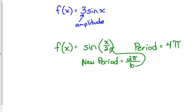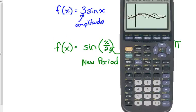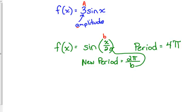You can see it on the graph: compare the original sine of x to sine of x over 2, and you can see we only complete one cycle between zero and four pi, so the new period is four pi. The number in front — we call this the coefficient A — stands for amplitude. Coefficient B changes the period.